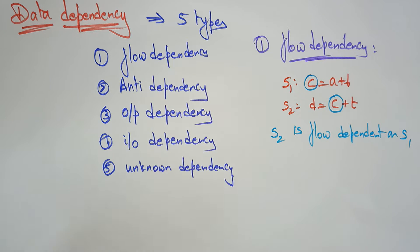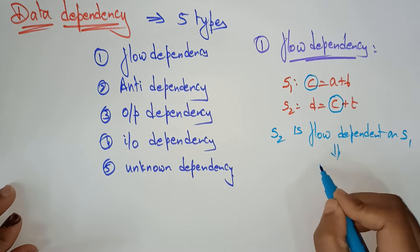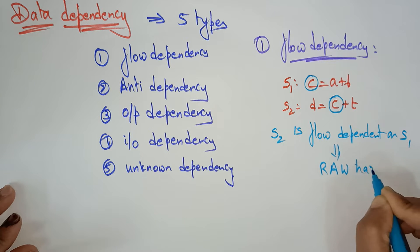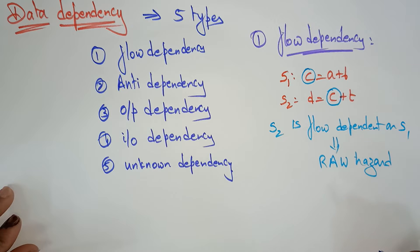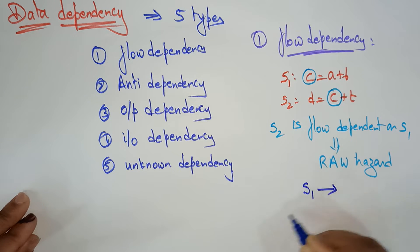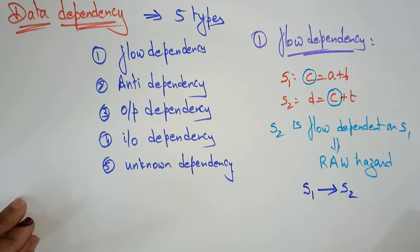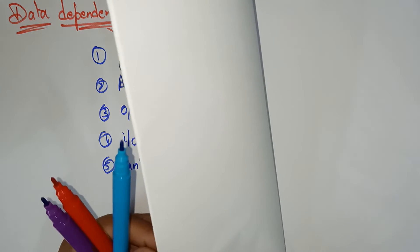Flow dependency is also called a RAW hazard — Read After Write hazard. You can represent this as S1 determines S2, meaning S2 is flow dependent on S1. This is the first type of data dependency.